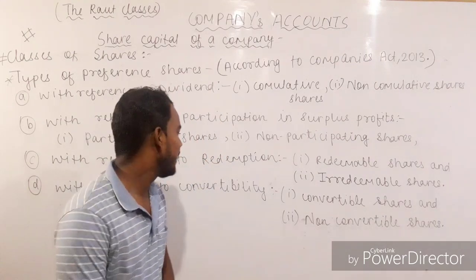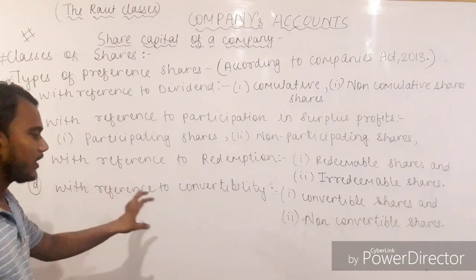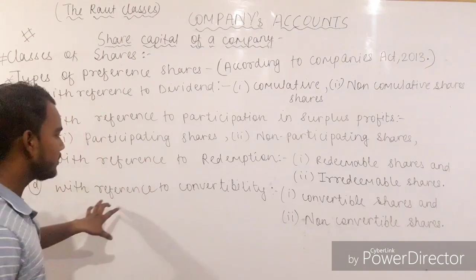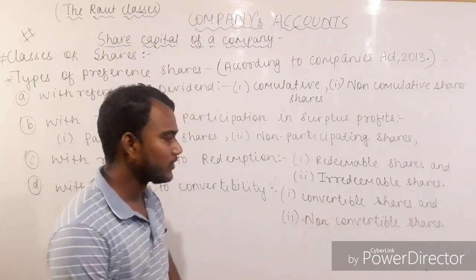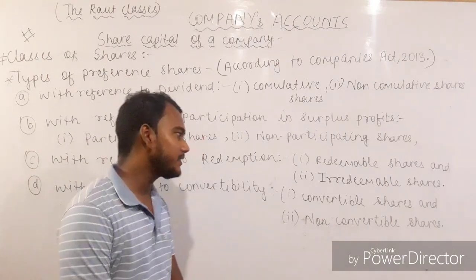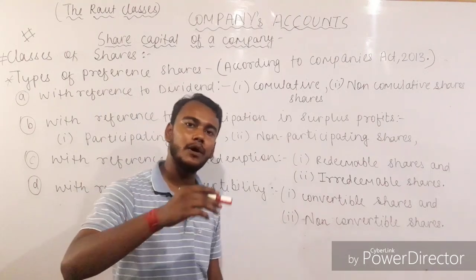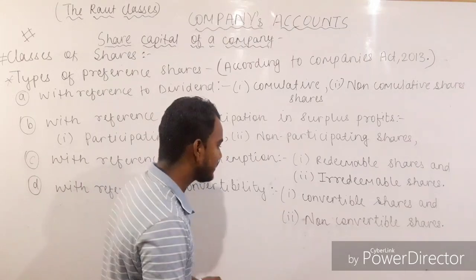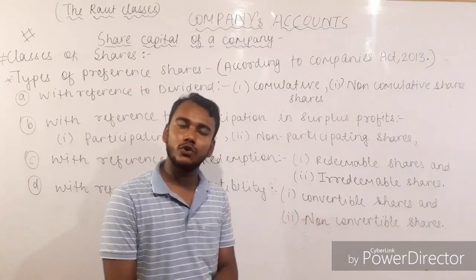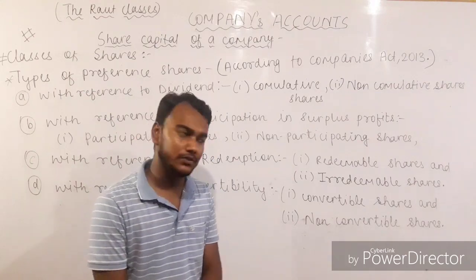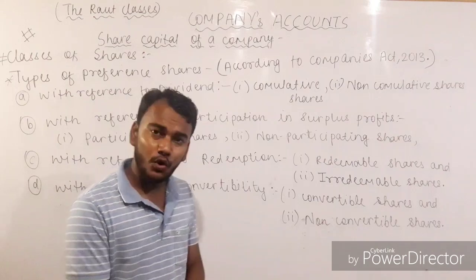The fourth and last basis for classifying preference shares is with reference to convertibility. Preference shareholders having the privilege of convertibility can convert their preference shares into equity shares. Whereas non-convertible preference shareholders will never be given a chance to convert their preference shares into equity shares.